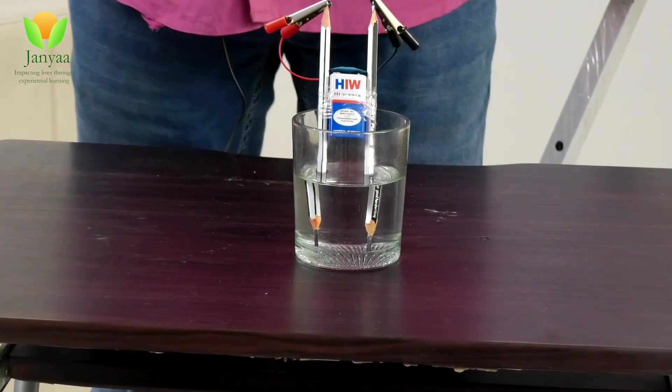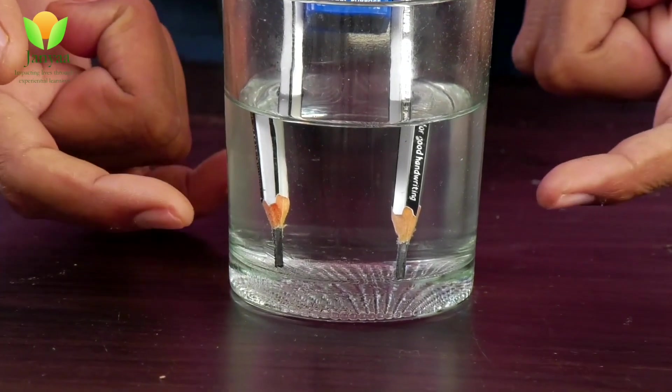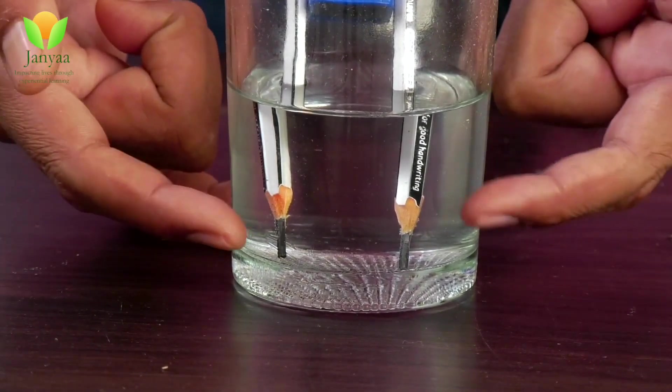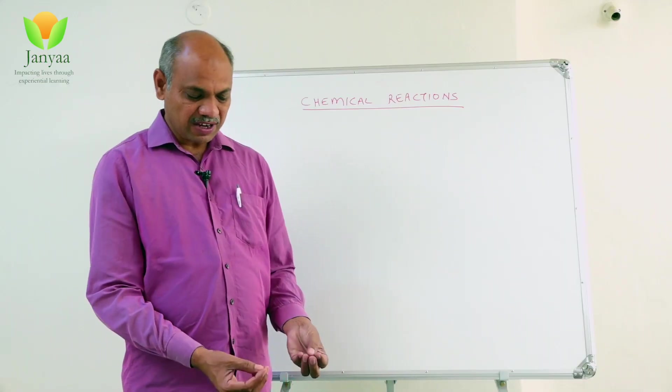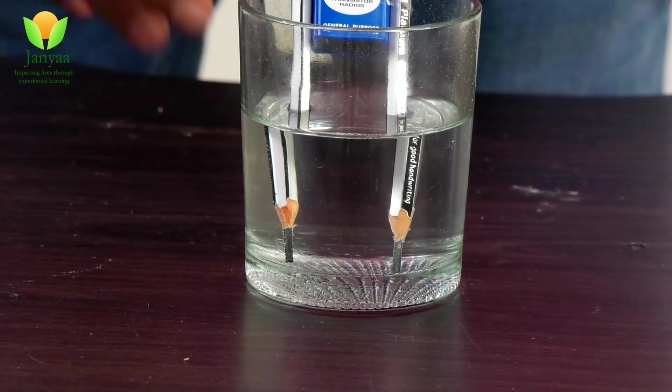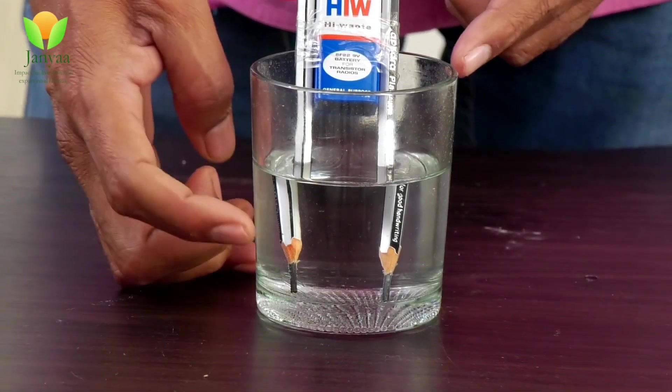But, you observe, keenly observe what happens. Do you observe any bubbles which are coming emitted from the graphite rods here, pencil lids? Air bubbles are coming, you see. If you observe at one terminal, more bubbles are coming. At another terminal, less bubbles are coming.